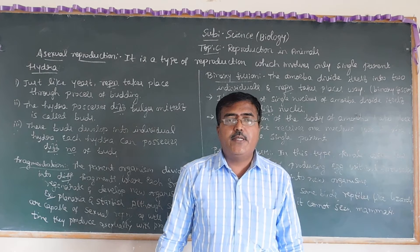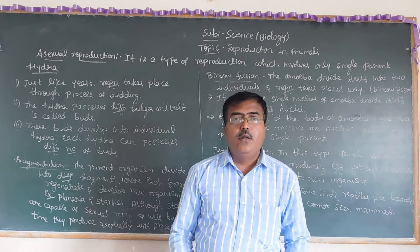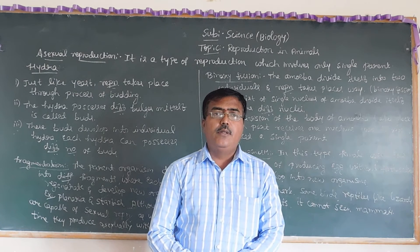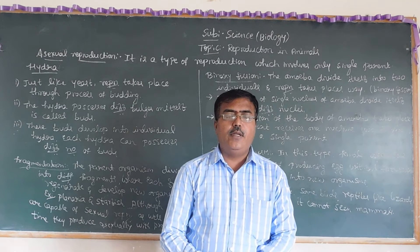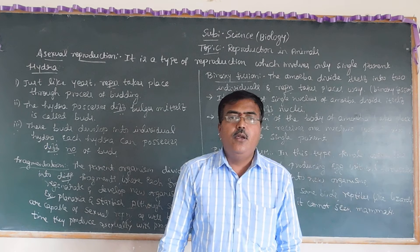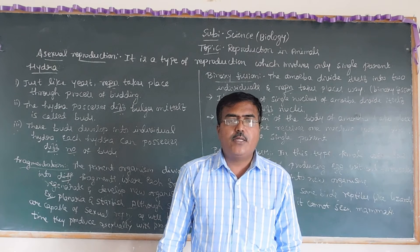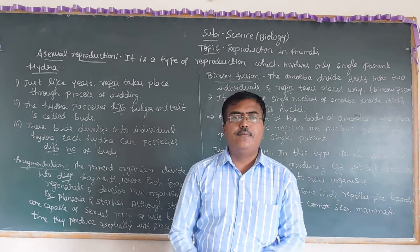Today we will discuss asexual reproduction in animals and the different methods involved. In sexual reproduction, fusion of male and female gametes occurs, forming a zygote through fertilization. Some animals have external fertilization while almost all animals before reptiles use external fertilization; higher animals use internal fertilization.